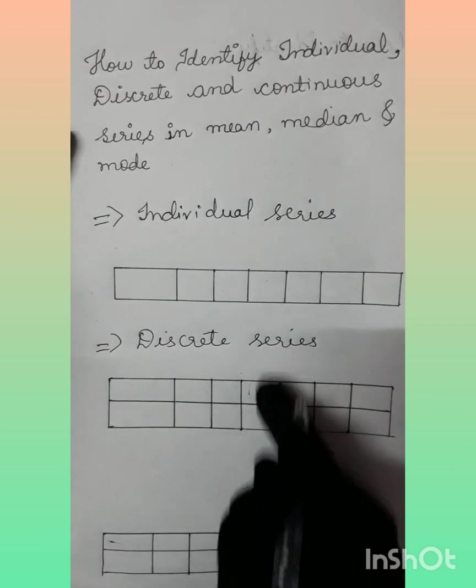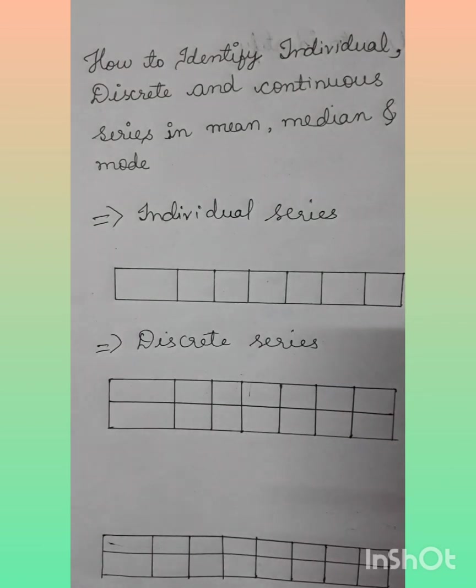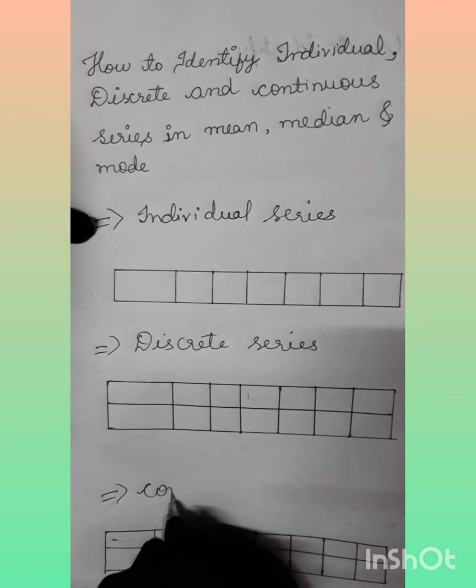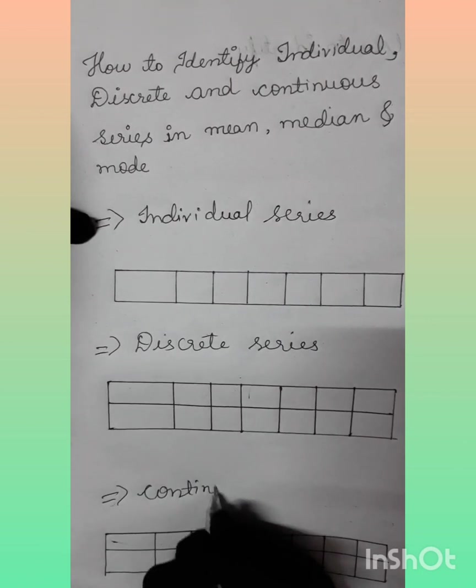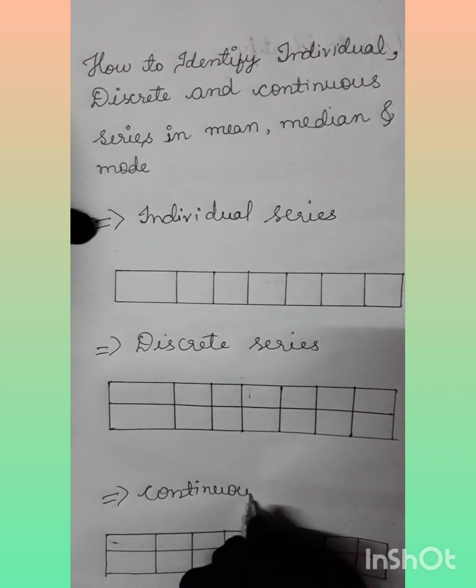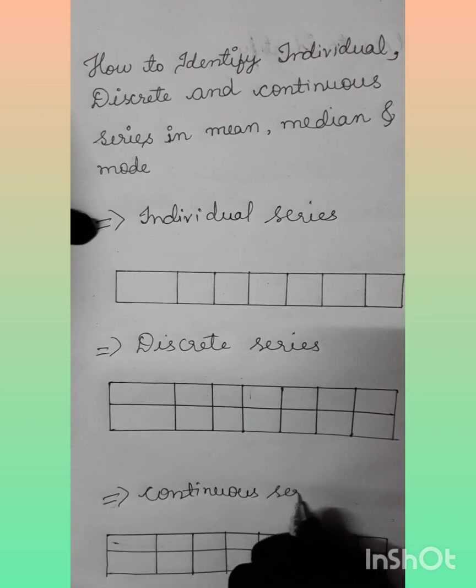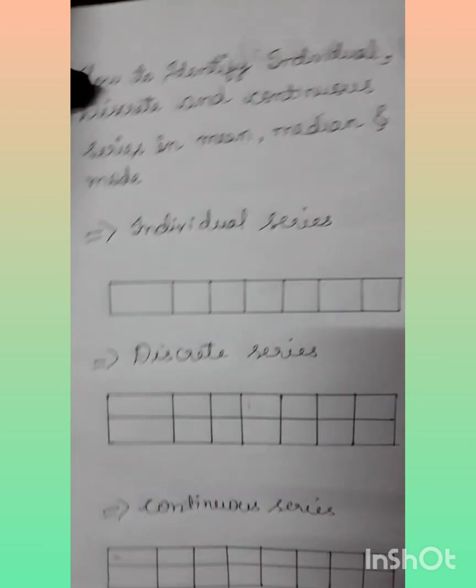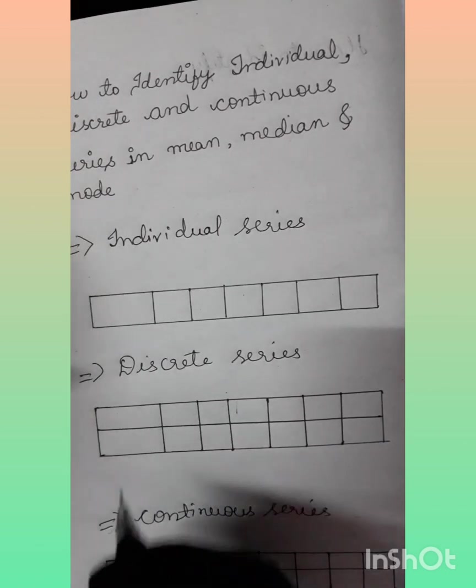If there are two lines, it will be a discrete series. In continuous series, there will also be two lines, but class intervals will be added. Based on the series type, we have to apply the appropriate formulas and solve the question.